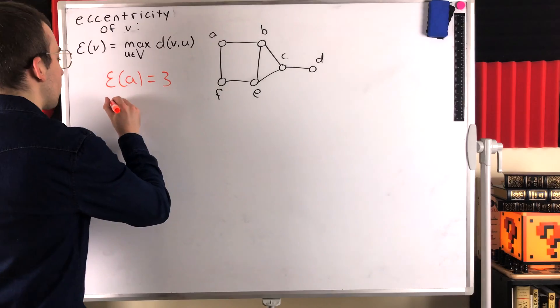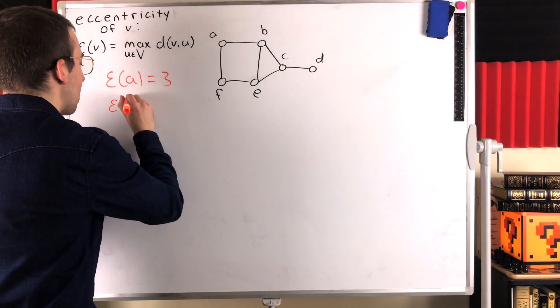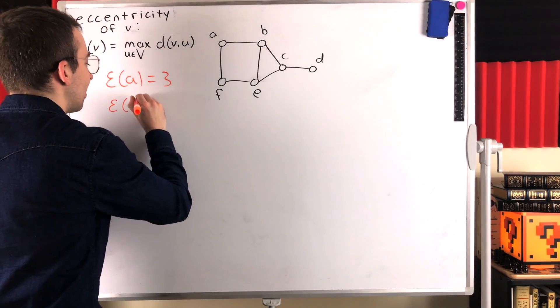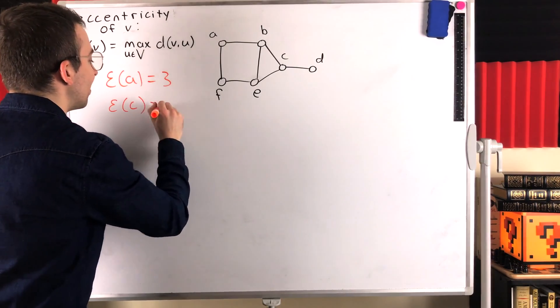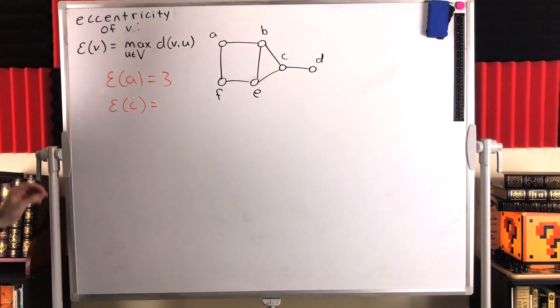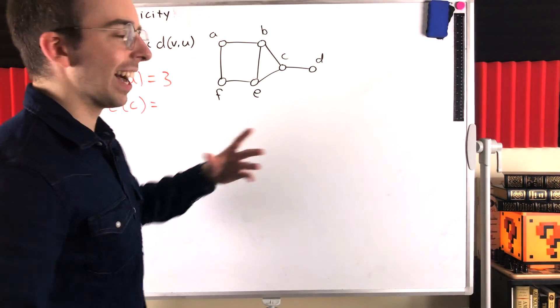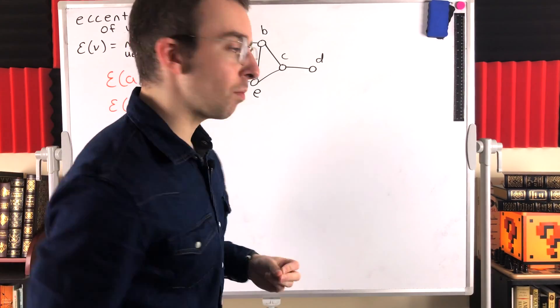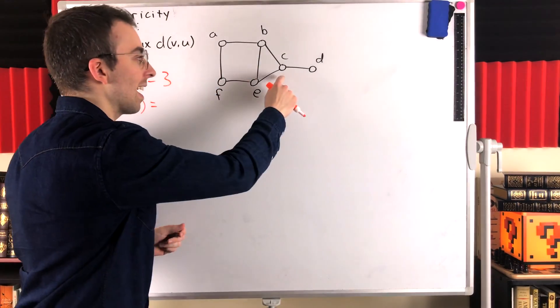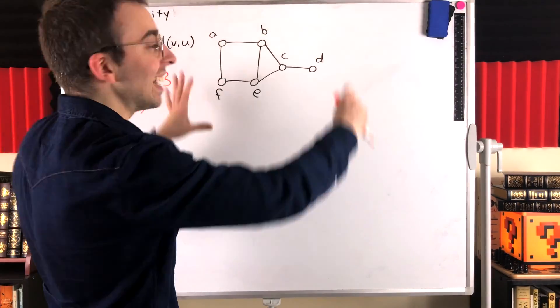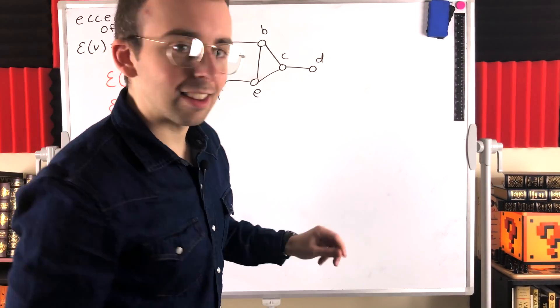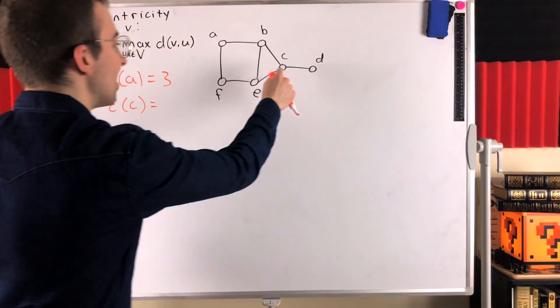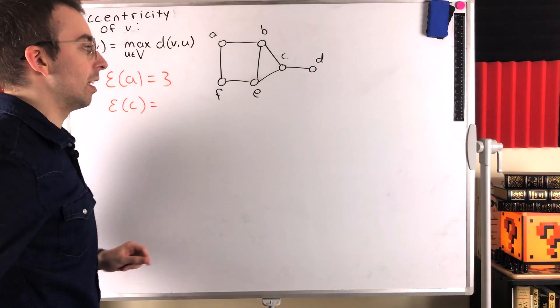For another example, how about the vertex c? What is the eccentricity of c? Again, it's the greatest distance between the vertex and any other vertex in the graph — that's the eccentricity of c.